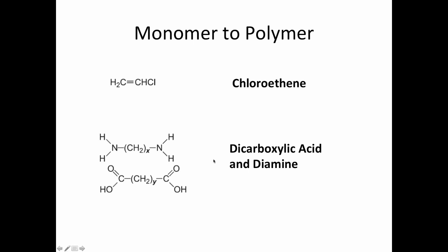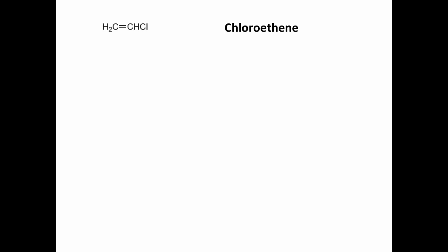So now let's have a look at, if we have the monomer, how do we figure out what the polymer is? Well, we've got two examples here, chloroethene, and then we've got a carboxylic acid and a diamine. So let's have a look at chloroethene.